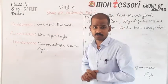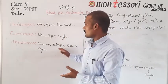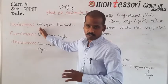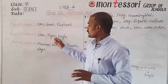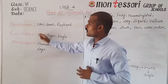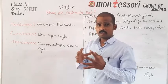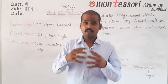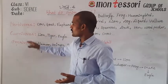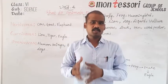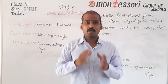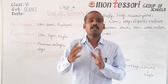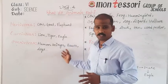Based on what they eat, animals can be separated into three groups. Animals which eat only plant-based food are called herbivores — for example, cow and goat. Animals which eat only other animals are called carnivores — for example, lion, tiger, and eagle. Animals and birds which eat both plant-based food and animal-based food are called omnivores — for example, human beings, bears, and dogs.